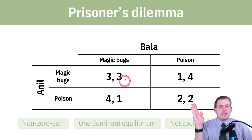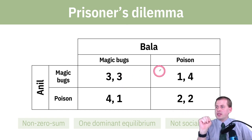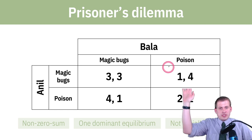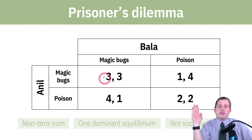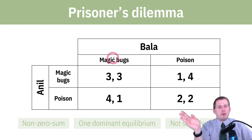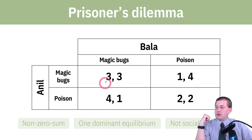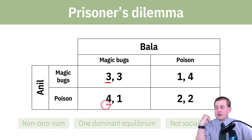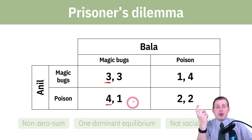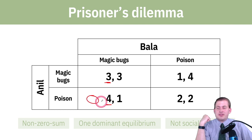Let's go through the same column and row process. Cover up the poison column: if you're Anil and you know Bala is going to use the magic bugs, you could get three utils using magic bugs or four utils using poison. So if you know Bala is going to use magic bugs, you should poison — because that's more effective for you.